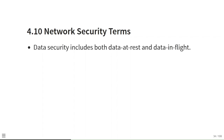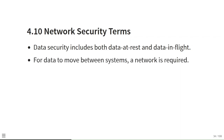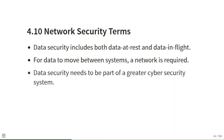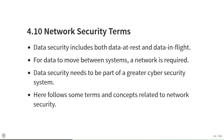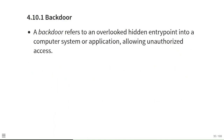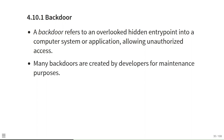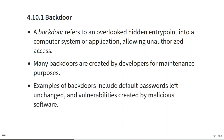Network security terms: data security includes both data at rest and data in flight. For data to move between systems a network is required, so data security needs to be part of a greater cyber security system. A backdoor refers to an overlooked or hidden entry point into a computer system or application allowing unauthorized access. Many backdoors are created by developers for maintenance purposes; examples include default passwords left unchanged and vulnerabilities created by malicious software. All backdoors are a security risk.